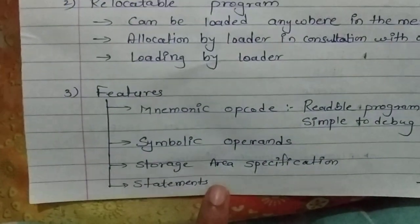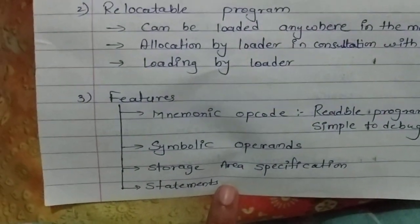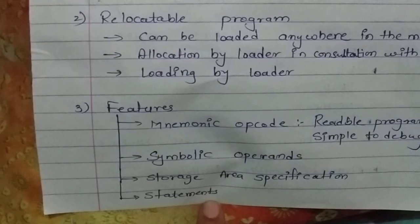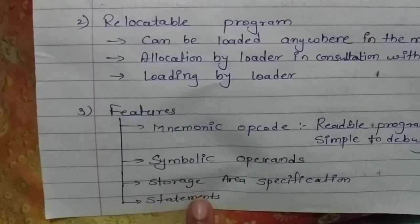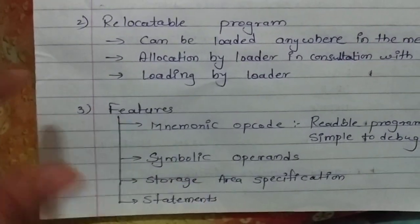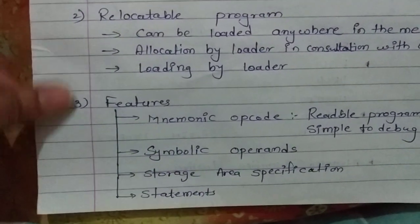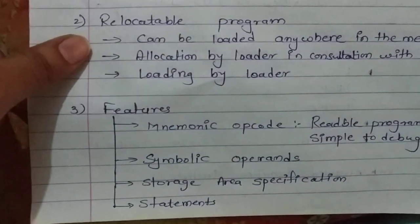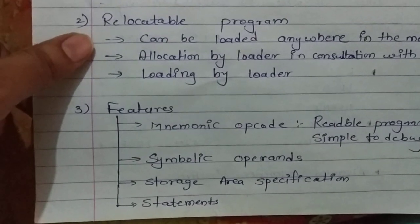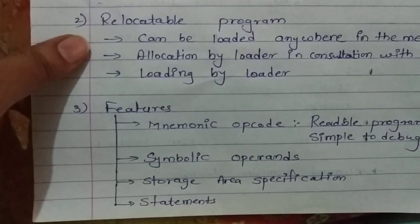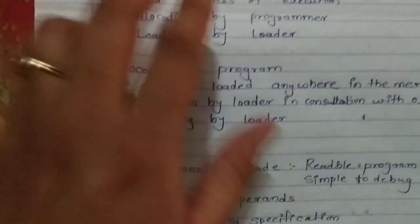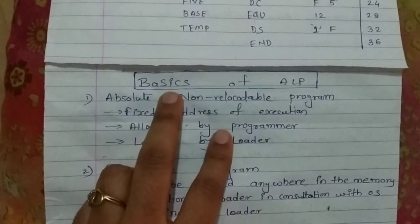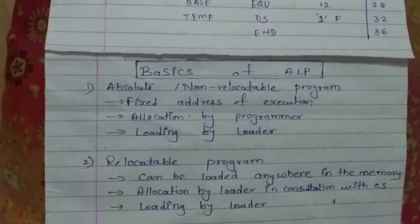The last feature, which we already covered, is that there are three different types of statements in assembly level programs: imperative, declarative, and assembler directive. That covers the basics of ALP.